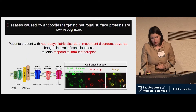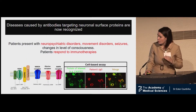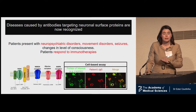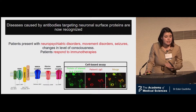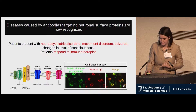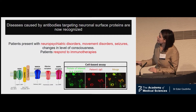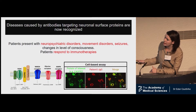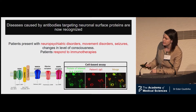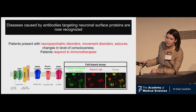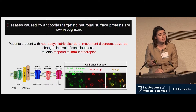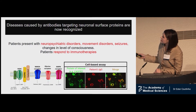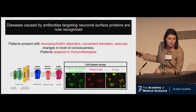We know that there are diseases caused by autoantibodies. They are rare diseases. Patients present with a wide range of neurological and psychiatric manifestations, and they respond to immunotherapies. Here we have a few examples — probably the one you're most likely to recognize is NMDA receptor encephalitis — but there are many other targets, and we usually detect them using a live cell-based assay, where we transfect live cells with our protein of interest, incubate them with the patient's serum or CSF, and detect the binding with immunofluorescence.